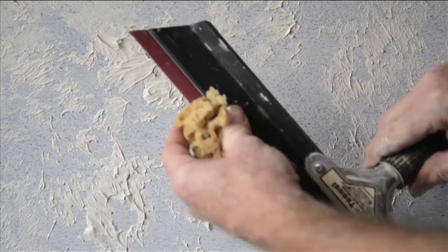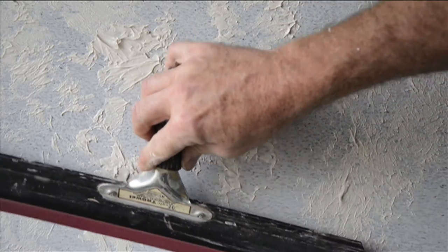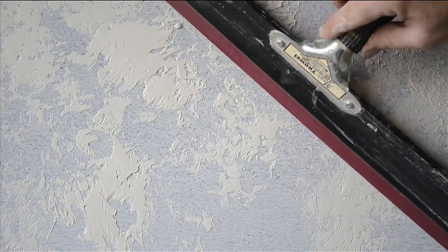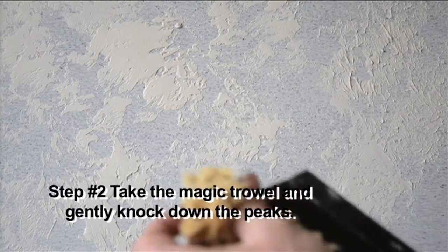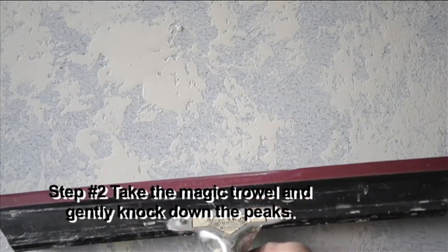We'll work maybe one or two square yards at a time, and before it has a chance to set up, we'll take the magic trowel, hydrate that edge a little bit with a damp sponge, and then just gently knock down the peaks. This will eliminate all the sharp peaks that you would get otherwise.